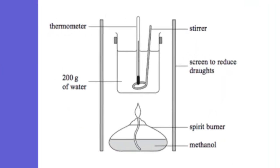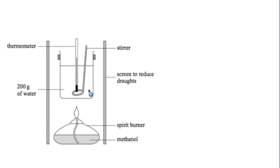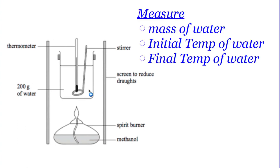Let me show you a problem. We have 200 grams of water with a thermometer, and methanol that is burning — the water is going to absorb the heat from the methanol. In these experiments they might ask what you have to measure. Keep in mind, measurements are different from calculations. You need to measure the mass of the water, the initial temperature of the water, and the final temperature of the water.